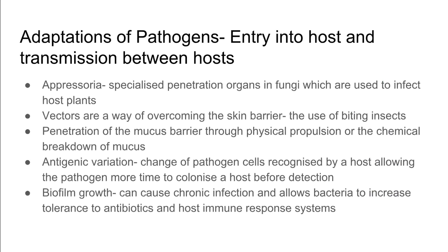When we talk about adaptations of pathogens, there are some which allow entry into the host and transmission between hosts. Appressoria are specialized penetration organs in fungi which are used to infect host plants. Vectors are another way of overcoming the skin barrier — for example, mosquitoes are biting insects which allow the skin to be penetrated so they can introduce disease. Pathogens can also penetrate the mucus barrier through physical propulsion or the chemical breakdown of mucus. Antigenic variation causes changes to pathogen cells recognized by a host, allowing the pathogen more time to colonize before detection.